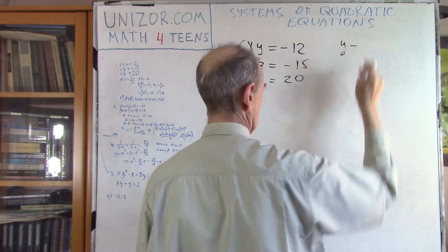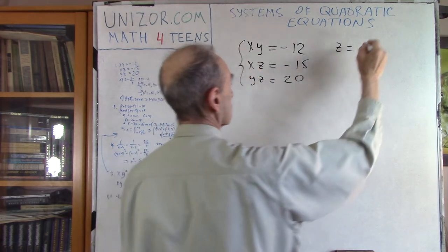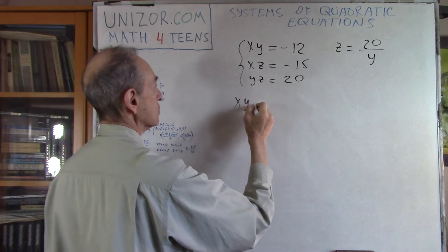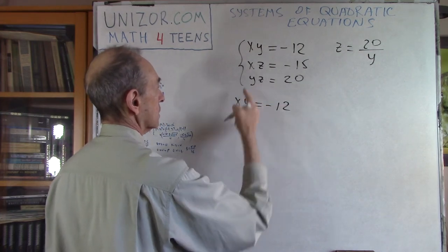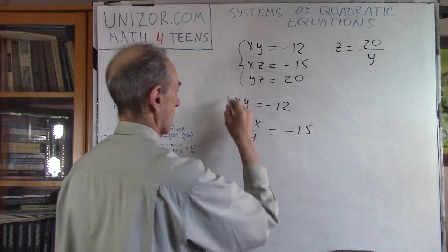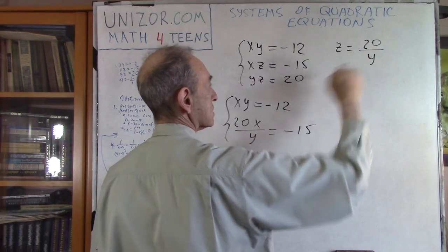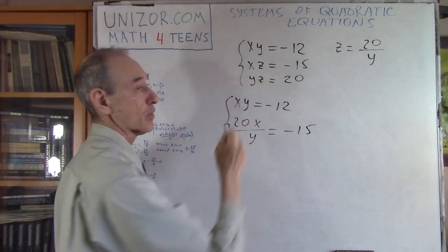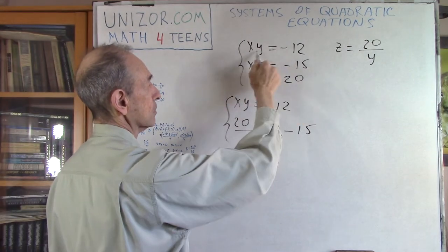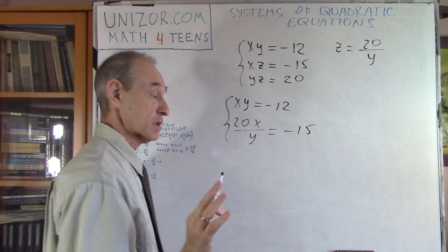So Z would be equal to 20 over Y. Now if I substitute it in the previous one, I will have a new system of equations. X times Z would be 20X over Y equals minus 15. Obviously this doesn't make sense if Y is equal to 0, but considering our equation, we definitely know that Y equals 0 is not a solution. Very important. Sometimes we can lose solutions.